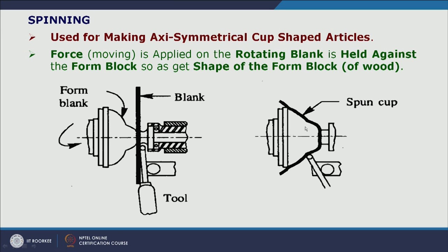As shown in the schematic diagram, spinning is used for making axis-symmetric cup-shaped products. The form block and the sheet metal are held between the form block and a support system, pressing the sheet metal against the form block. The form block is rotated, and the round-tipped tool is pressed onto the sheet metal so that it deforms and takes the shape of the form block. The force is applied onto the rotating blank held against the form block. A hand tool applies force onto the sheet metal while it rotates with the form block. The form block is normally made of wood.